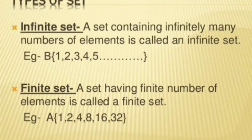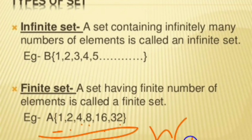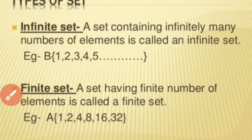A set containing infinitely many elements is called an infinite set — for example, {1, 2, 3, 4, 5, ...} and so on. A finite set is a set having a finite number of elements — for example, here we can count 6 elements: 1, 2, 3, 4, 5, 6. So N(A) = 6. Where we can count it is finite; where we cannot count, it is infinite.